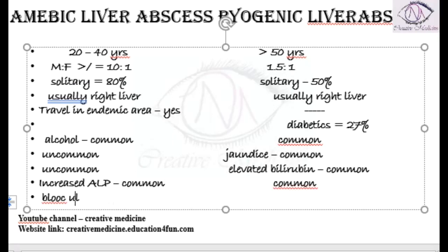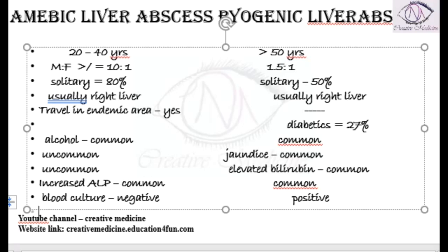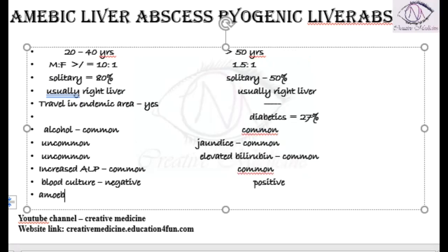Blood culture will be found to be negative in amoebic liver abscess, whereas blood culture is positive for pyogenic liver abscess, because bacteria is the causative agent in pyogenic liver abscess.